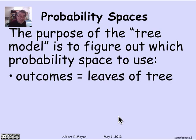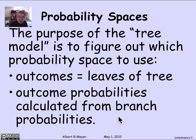When we're using the tree model, it's the leaves of the tree that correspond to the outcomes. And the outcome probabilities, which are crucial for having a probability space, we got by reasoning about the probabilities to assign to each possible branch of the tree as you worked your way from root to leaf.